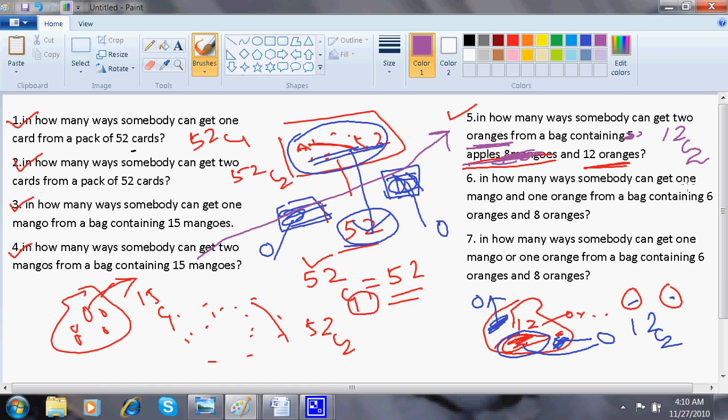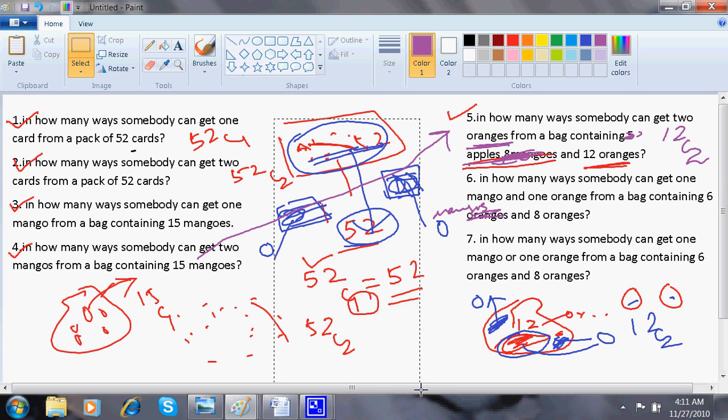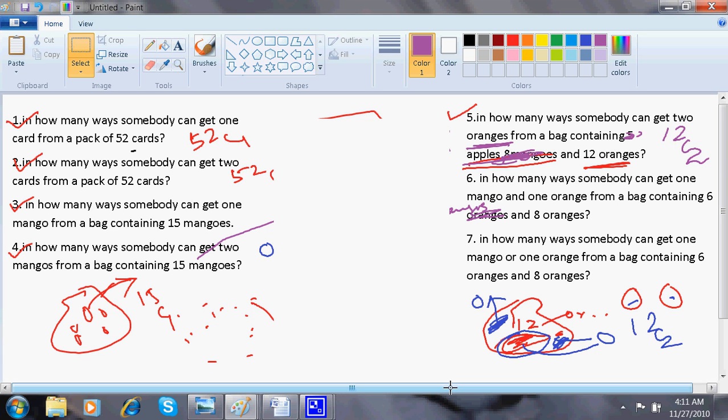In how many ways somebody can get one mango and one orange from a bag containing six oranges and eight, I'm sorry, this would be mangoes. Some errors remain with me while I'm making the videos. Please excuse me for that. In how many ways somebody can get one mango and one orange from a bag containing six mangoes and eight oranges? I need some space.